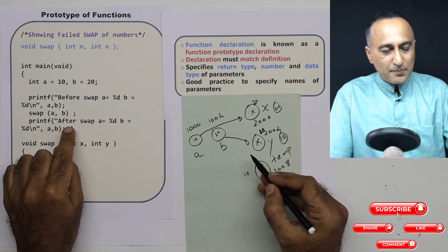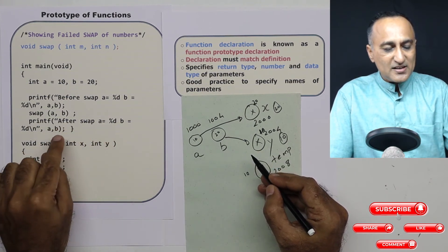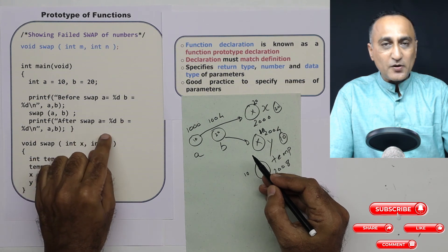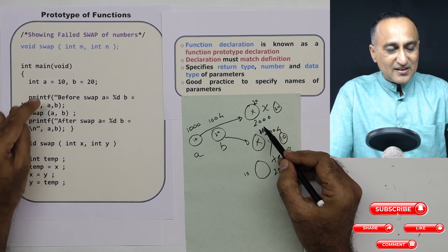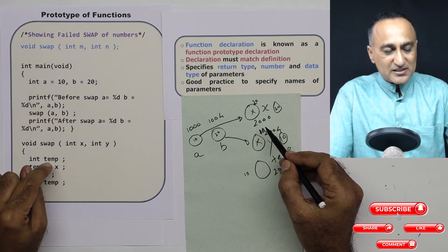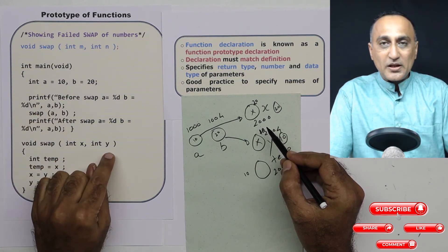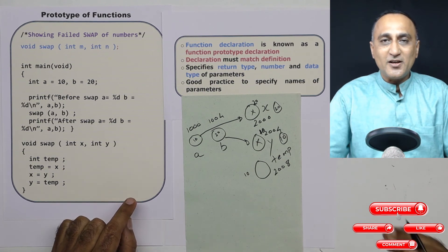So when I come back here and print the value of A and B, it is simply again going to print 10 and 20, not 20 and 10.